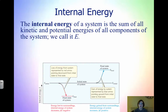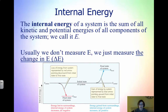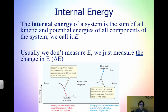Internal energy is actually the sum of all of the kinetic and potential energies of everything within the system, and this is denoted by the capital E. Usually we don't measure the internal energy itself — we just measure the change in energy. When you see the delta, that means change in. Typically what we do is measure the change in energy because the system undergoes a change, which means it could either be worked on or have heat transferred.